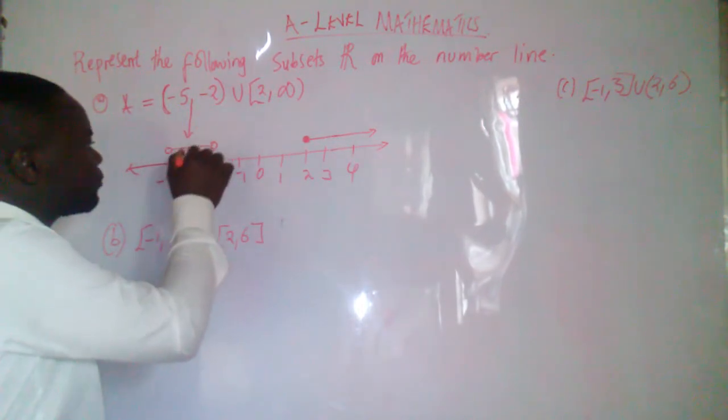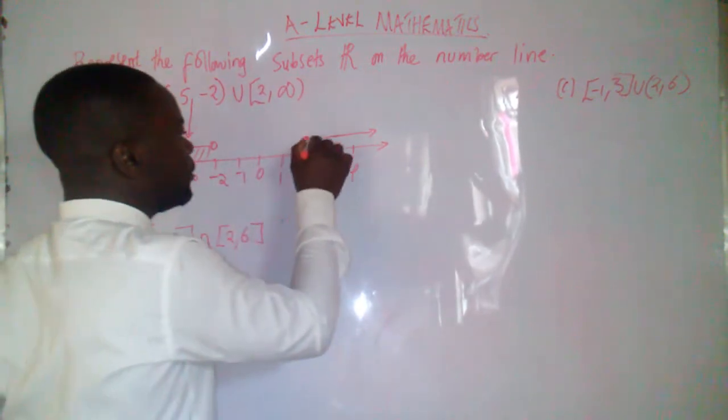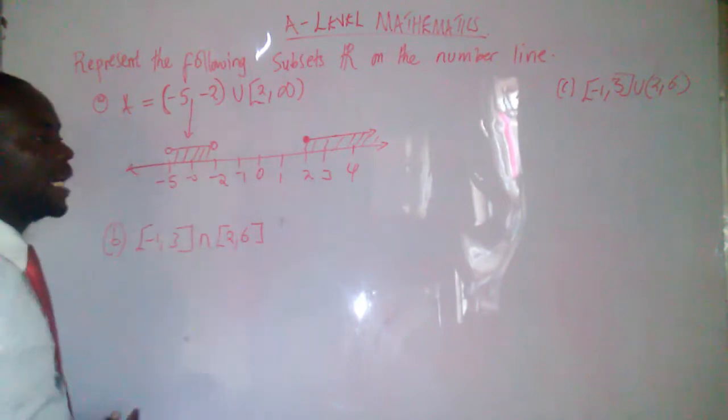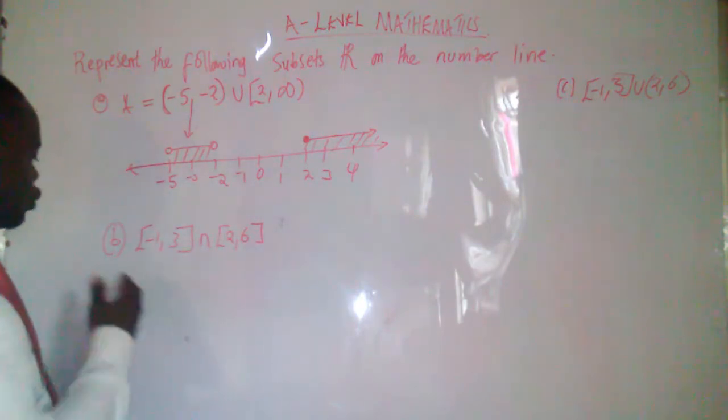But we can show them by shading. So we can shade them like this. Even here we can shade like this. So it means that we have showed question A on the number line. Let's go to B.